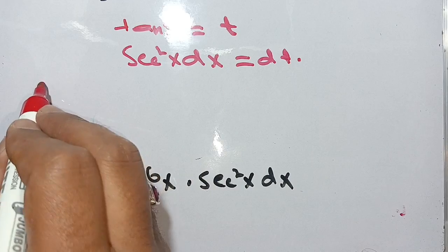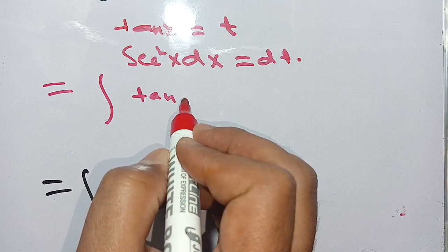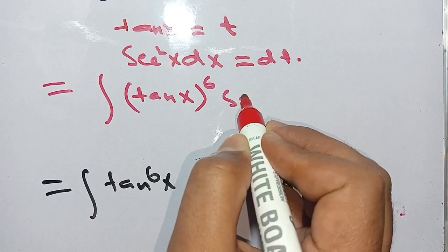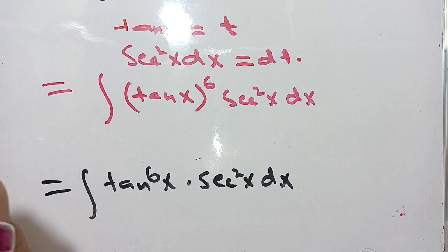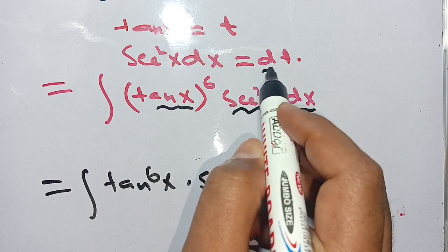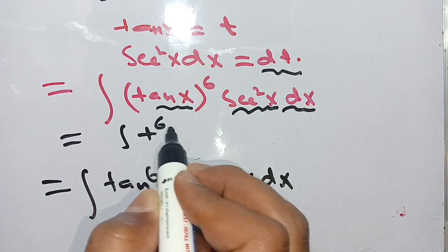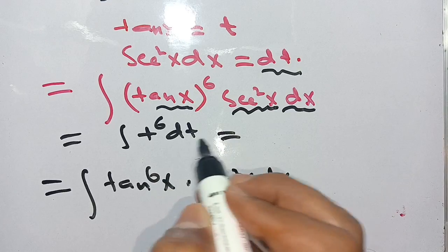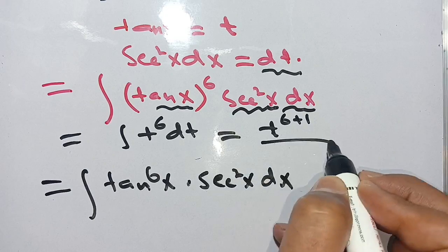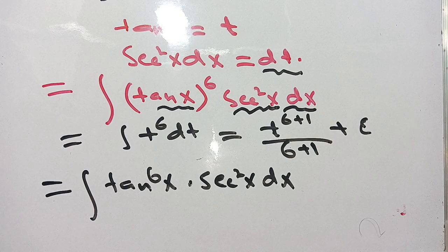Thus our integration becomes the integration of tan⁶(x) times sec²(x) dx, written as the integration of t⁶ dt. Its integration will become t raised to the power 6+1, divided by 6+1, plus C, where C means constant.